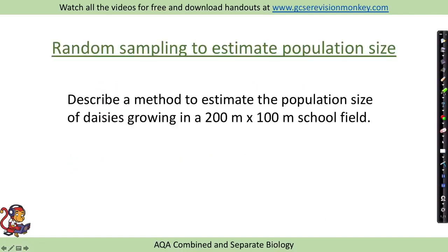So random sampling might be used to estimate a particular population size. For example, you might get a question that says describe a method to estimate the population size of daisies growing in a 200 meter by 100 meter school field.